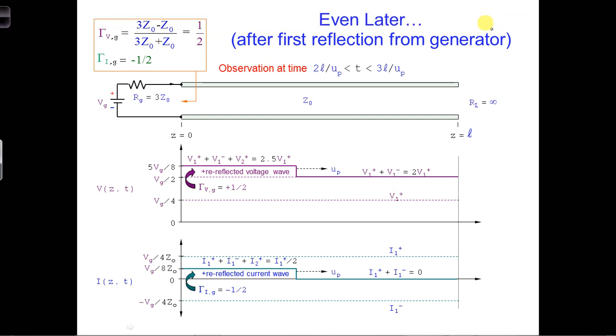Let's check your work. In this time period, the reflected V1- wave has had enough time to reach the generator, where it could create a second positive traveling wave, which we'll call V2+. You can calculate the amplitude of V2+ and I2+ using a reflection coefficient at the generator, which you can see here.